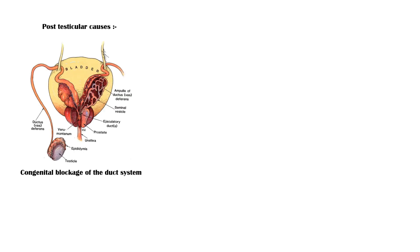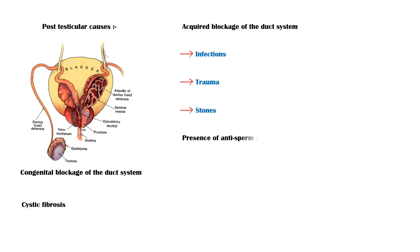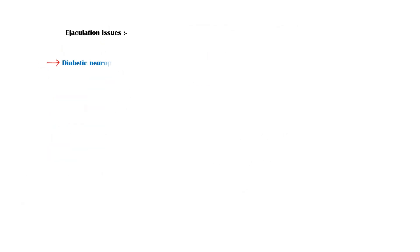Post-testicular causes include congenital blockage of the duct system, cystic fibrosis, acquired blockage of the duct system due to infections, trauma, and stones. Presence of anti-sperm antibodies, ciliary defects in the outflow tract, ejaculatory duct obstruction, and ejaculation issues due to diabetic neuropathy.